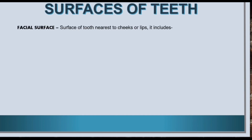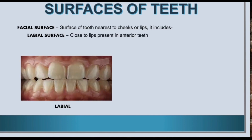Now let us know about the surfaces of teeth. First, let us know about the facial surface. Facial surface is the surface of the tooth nearest to the cheeks or lips. It includes labial surface or buccal surface. Labial surface is close to the lips and is present in anterior teeth.